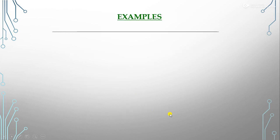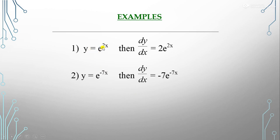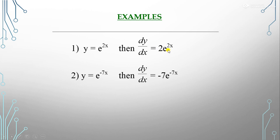Let's take some examples. If y = e^(2x), then dy/dx = 2e^(2x), because the coefficient of x is 2, which comes forward. Using the chain rule, let u = 2x, so d/dx(e^u) = e^u · du/dx = 2e^(2x).